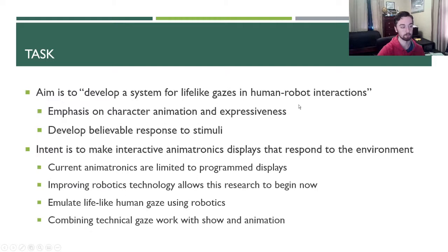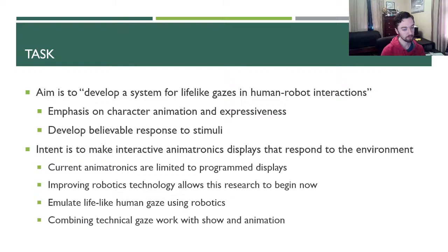The task proper was to develop a system for lifelike gazes and human-robot interactions, with an emphasis on character animation and expressiveness because it is meant for animatronic shows and theme parks. Another goal was to develop a believable response to external stimuli — things the robot would notice and choose to interact with. Current animatronics are limited to pre-programmed displays; they're not capable of responding to anything happening outside of them. They simply put on a show with specific pre-programmed movements and then they're done.